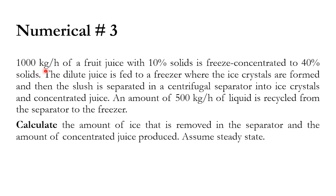Numerical number three: 1,000 kg/hr of fruit juice with 10% solids is freeze-concentrated to 40% solids. The dilute juice is fed to a freezer where ice crystals form, and the slush is separated in a centrifugal separator into ice crystals and concentrated juice. Additionally, 500 kg/hr of liquid is recycled from the separator back to the freezer. We must calculate the amount of ice removed and the concentrated juice produced, assuming steady state.